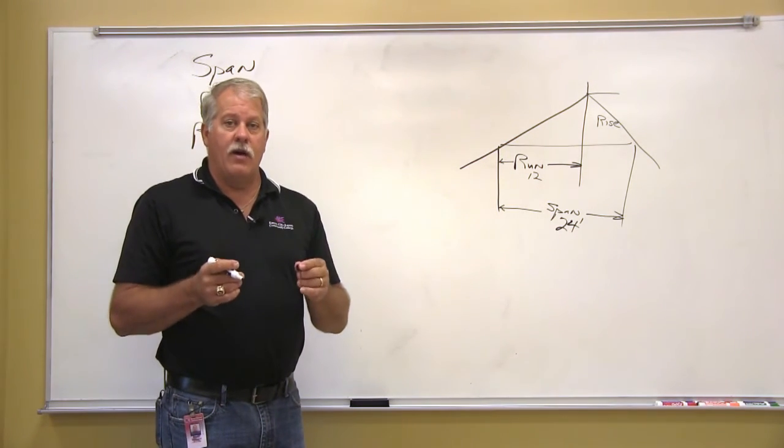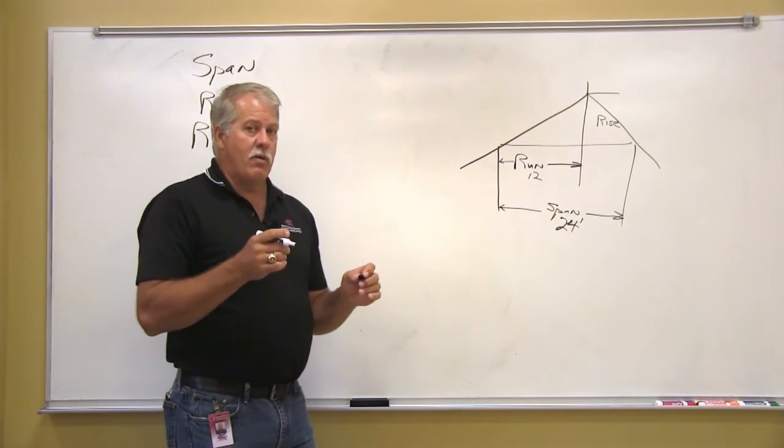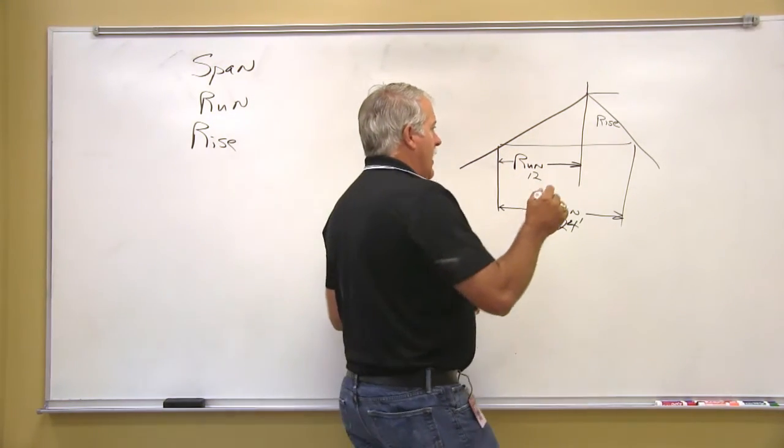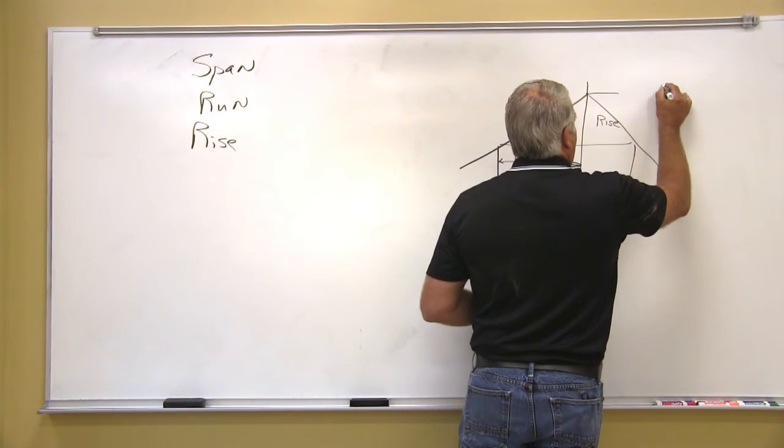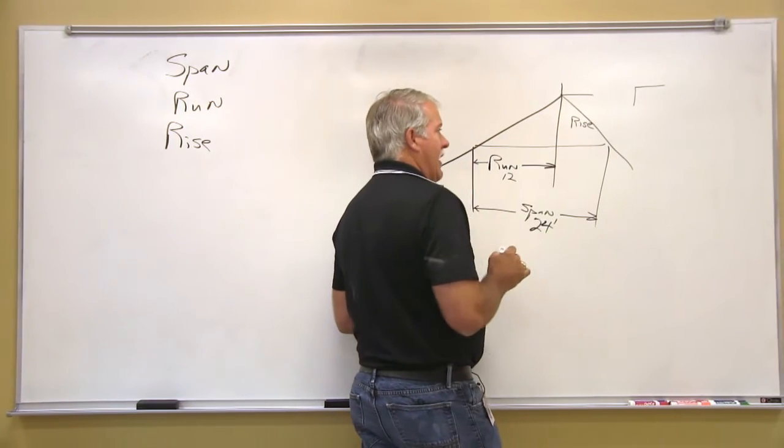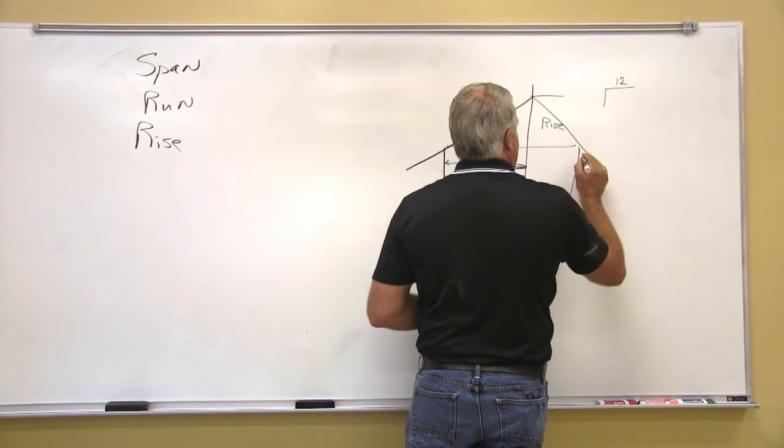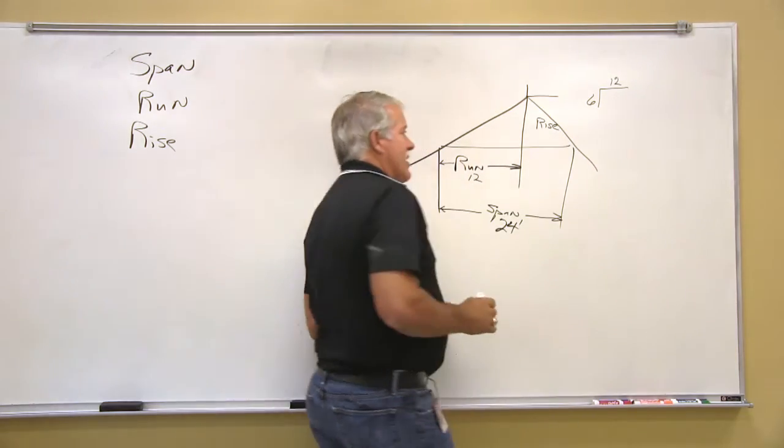Usually on a drawing it's going to tell you what the slope is or the pitch of the roof is. It will have a symbol on it that looks like that, telling you that this is 12 and this is 6.